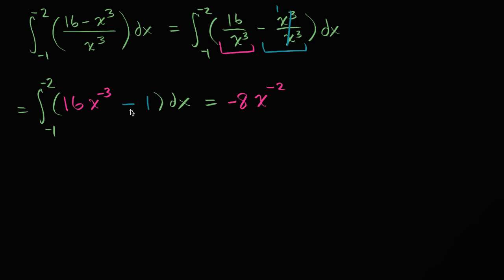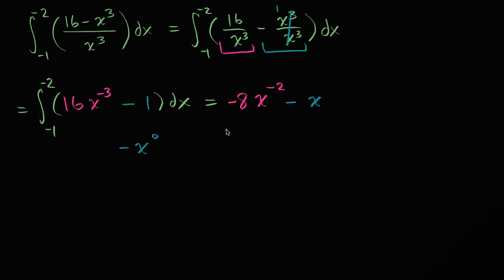The antiderivative of negative one is just negative x. You can verify this because the derivative of negative x is negative one. Or you can view negative one as negative x to the zero power, increase the exponent by one to get x to the first, and divide by one — either way you get negative x.